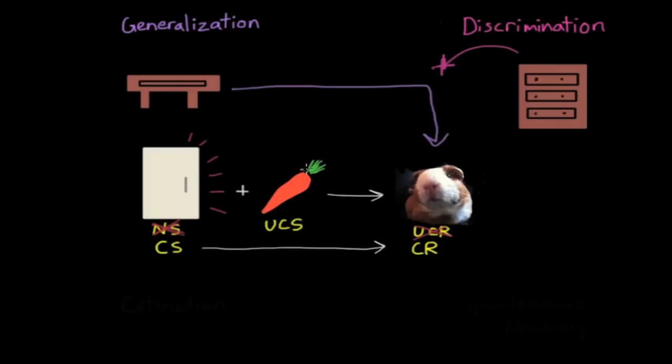However, if I decided to stop giving her carrots altogether, eventually she would learn that the sound of the refrigerator door alone isn't followed by a carrot, and the sound of the refrigerator door would gradually stop making her behave the same way she behaves when she receives a carrot. And we refer to this phenomenon as extinction. And it's when the conditioned stimulus is repeatedly presented without the unconditioned stimulus, and so eventually the conditioned stimulus is no longer able to elicit the conditioned response.